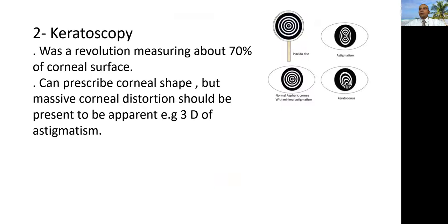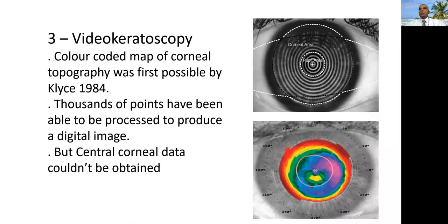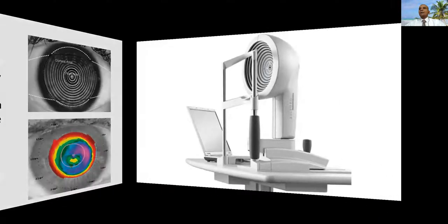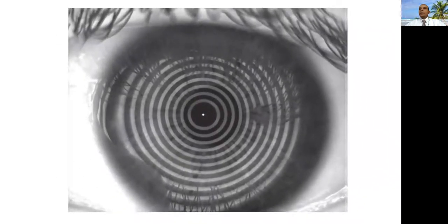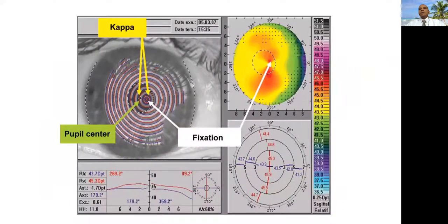The second stage was keratoscopy, which was a revolution at that stage, representing or capturing about 70 percent of corneal surface. But still, it needs a major difference in the distortion of the corneal surface, like three diopters of astigmatism to be captured. Then a revolution through invention of video keratoscopy, using a camera and a video device recording the process of capturing. And this was represented by Allegretto Topolyzer, which was and still is used to treat some corneal surface irregularities.